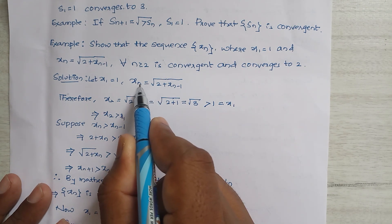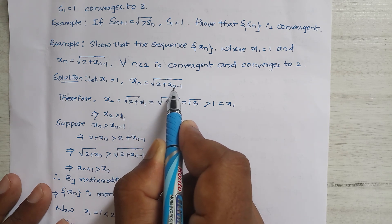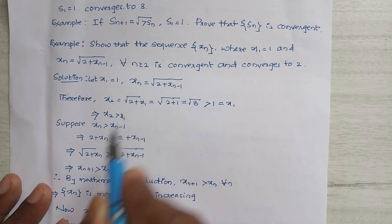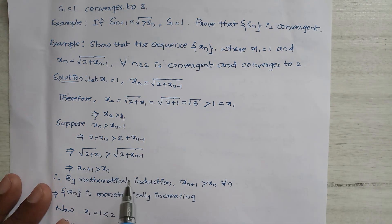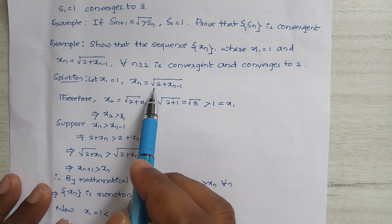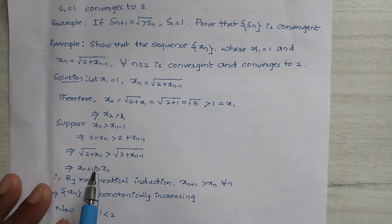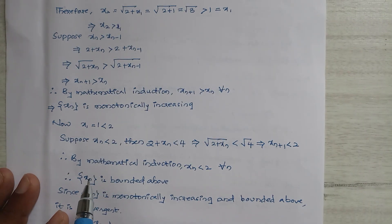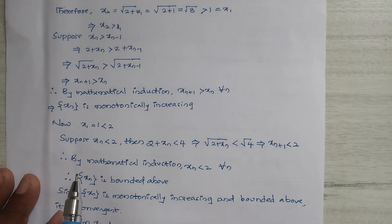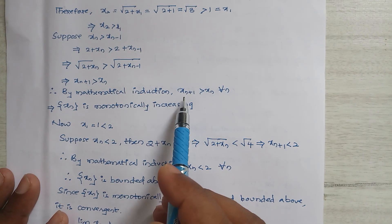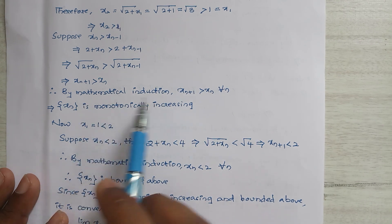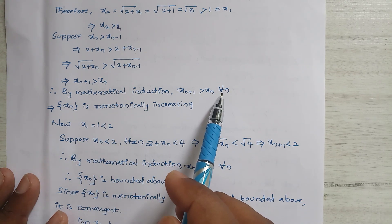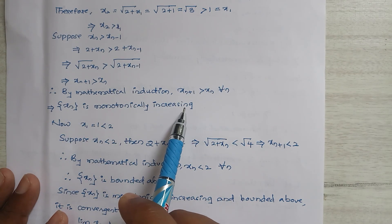Putting n+1 in place of n in the recurrence gives xn+1 = √(2 + xn), confirming the step. By mathematical induction — the result is true for n = 1, and assuming true for n = k we proved it for n+1 — therefore xn+1 > xn for all n, which means xn is monotonically increasing.